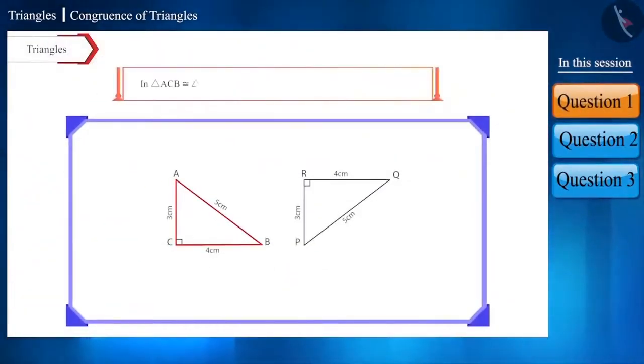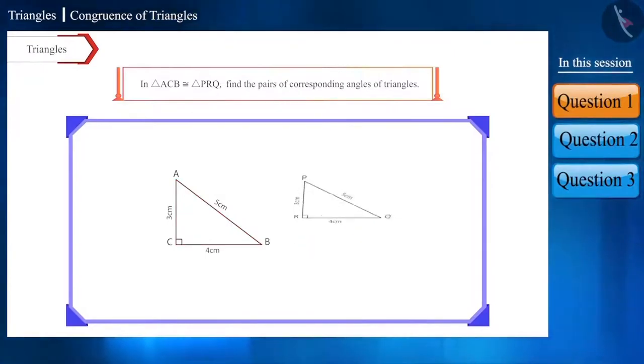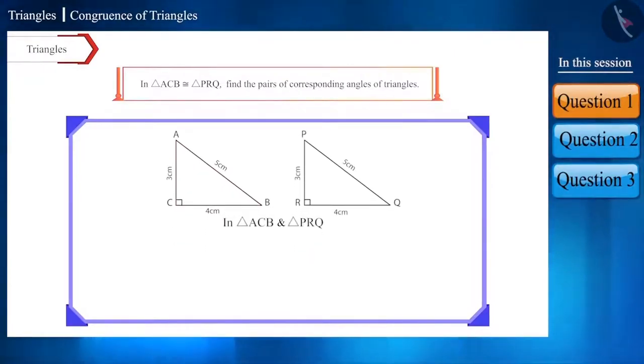Let's take the first question. If triangle ACB is congruent to triangle PRQ, then find the pairs of corresponding angles of these triangles. The answer to this question is very easy. Here are their pairs of corresponding angles.